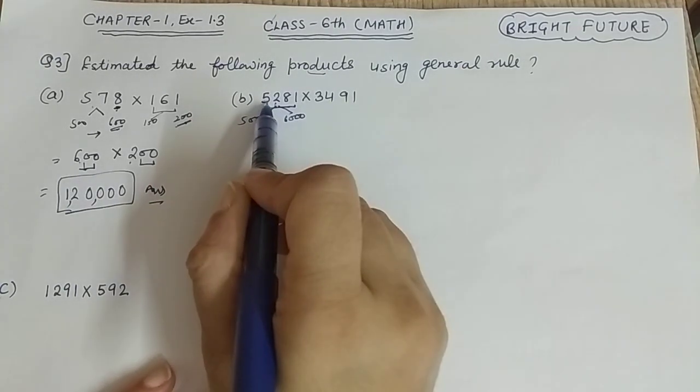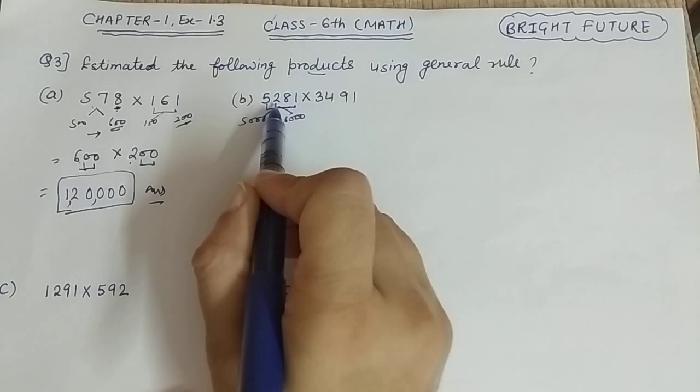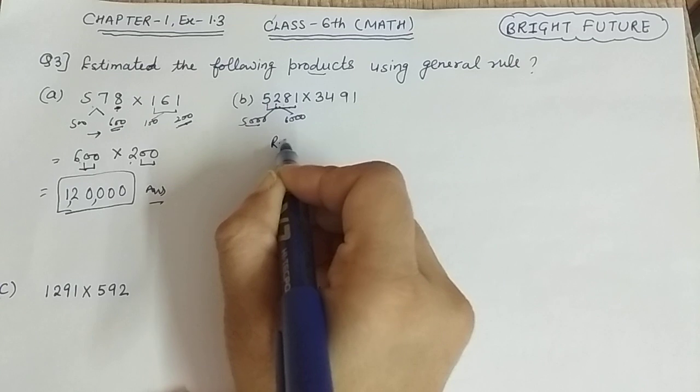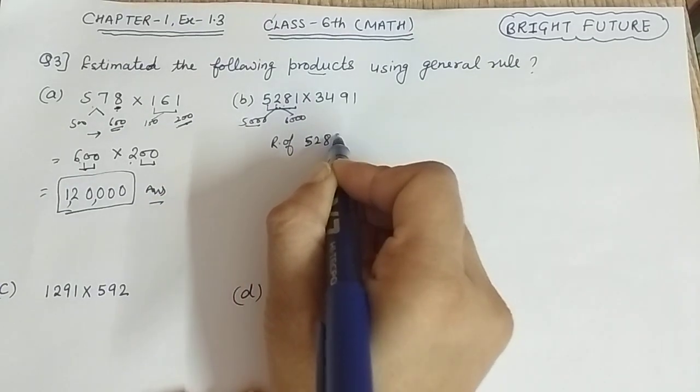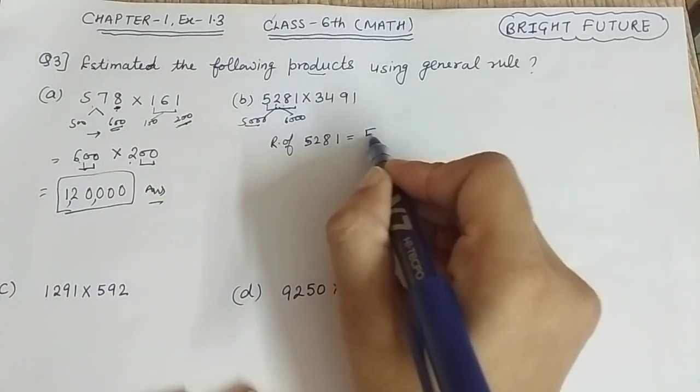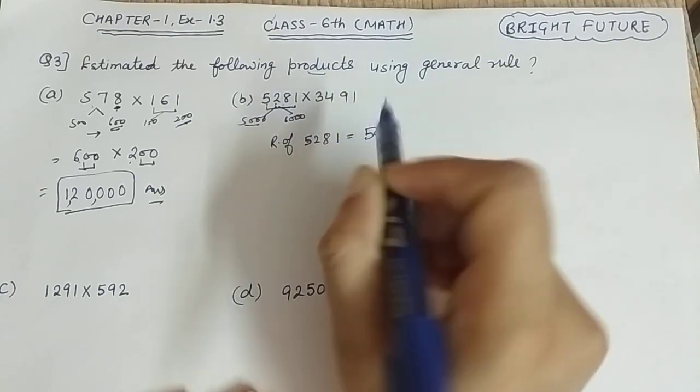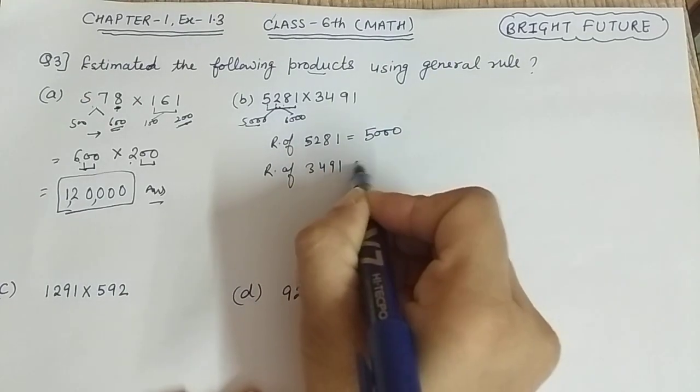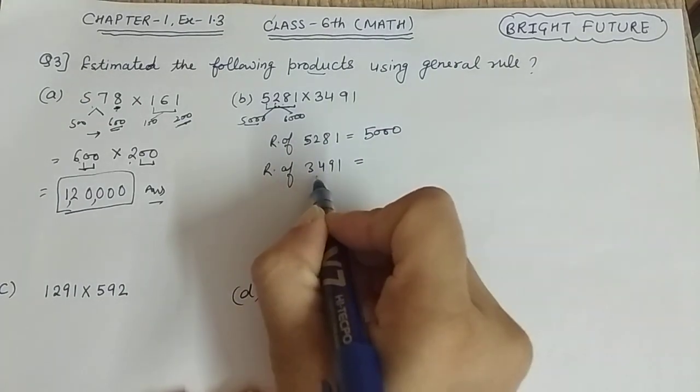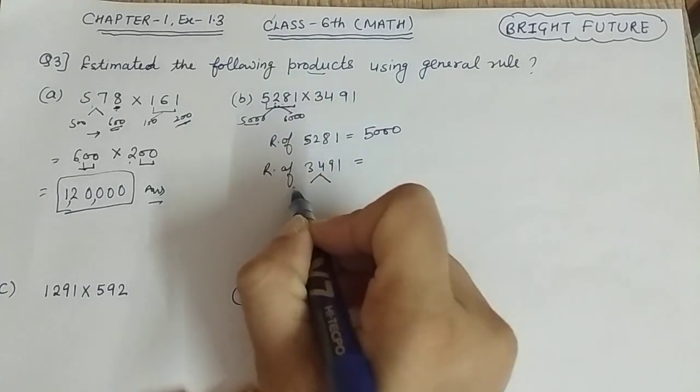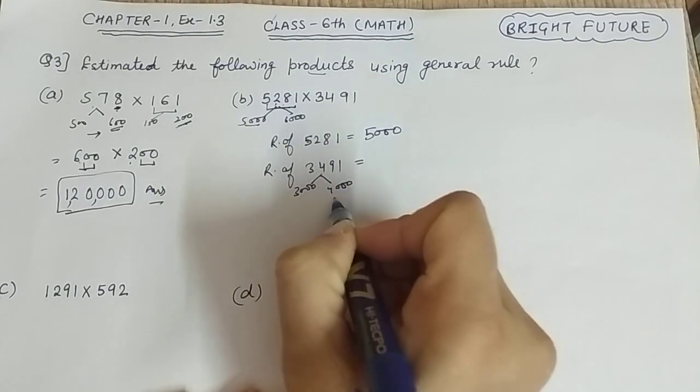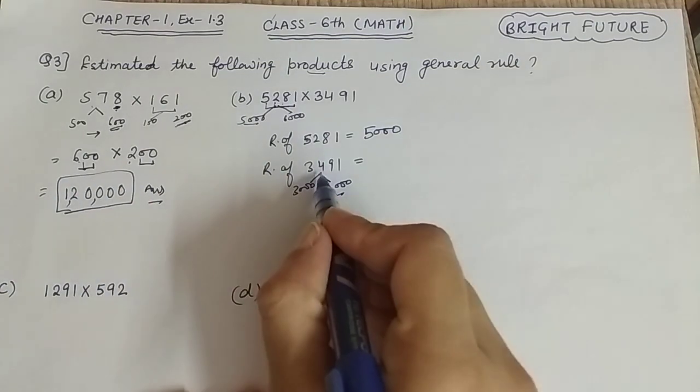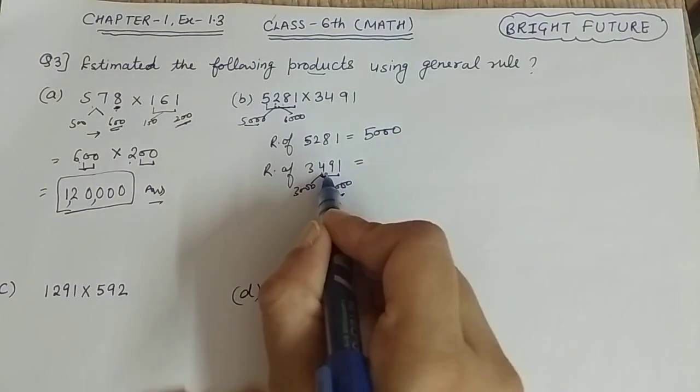In thousands, what will be closer to 5,000? It will be 5,000. So rounding off 5,281 will be 5,000. Now 3,491 - if we take it, it will be between 3,000 and 4,000. If you look at 491, it will be 4,000 or 500. This is 91, so for only 9 we need to add to make 500.